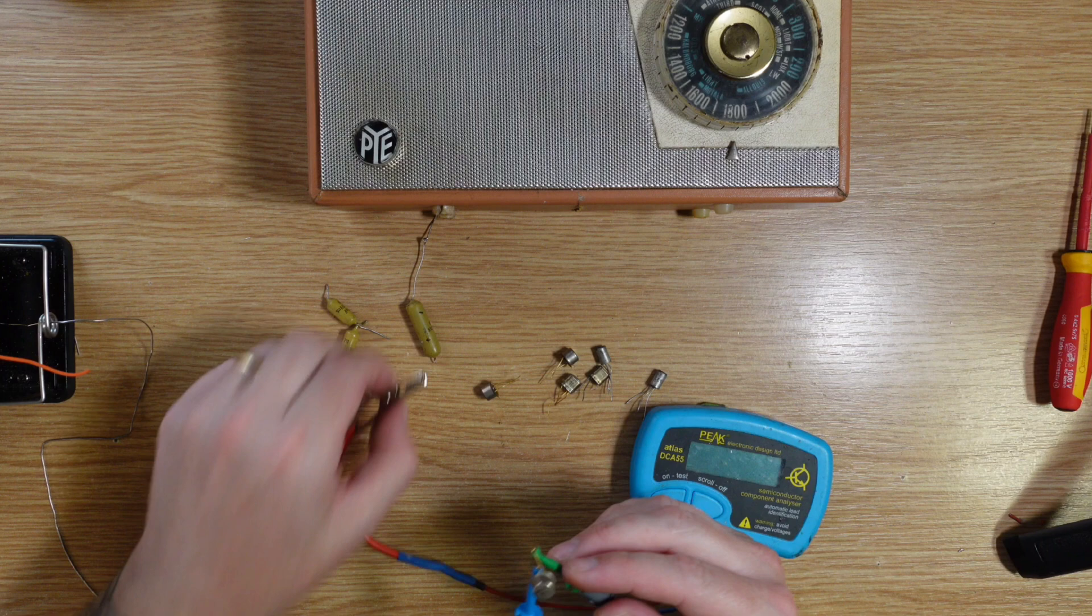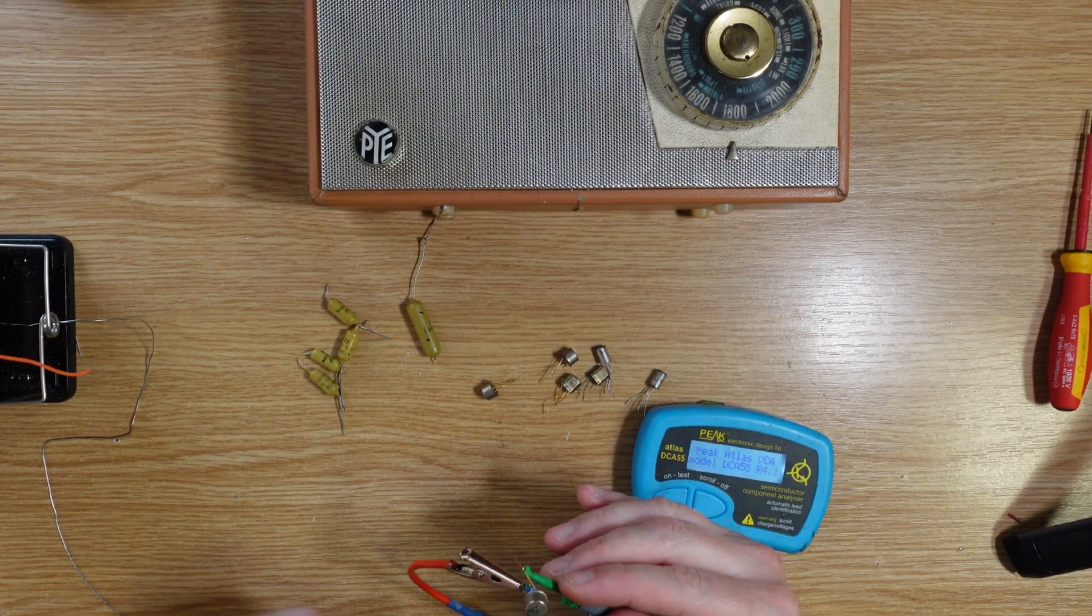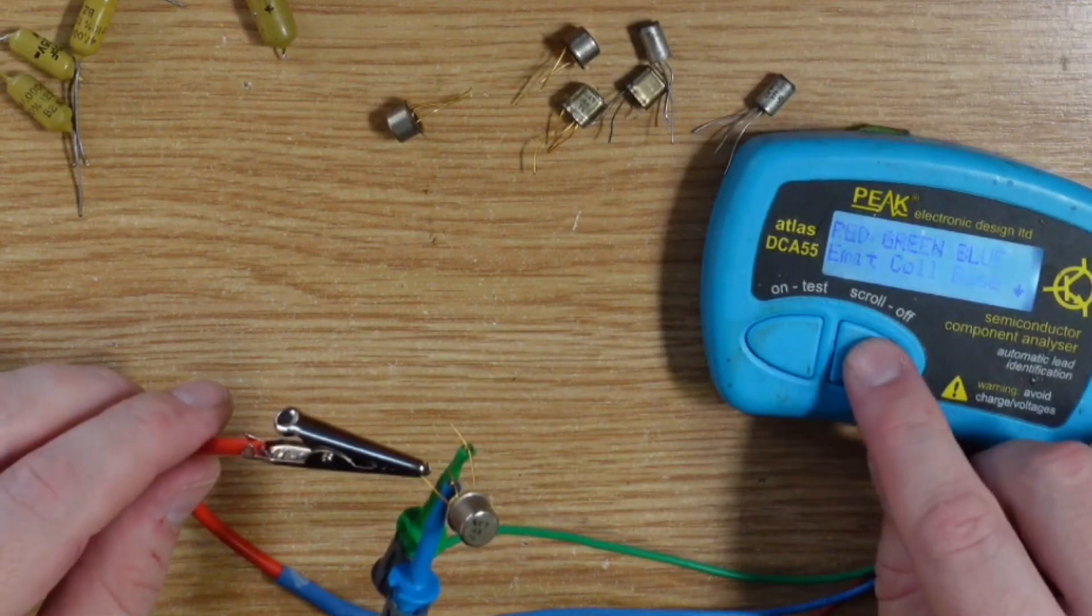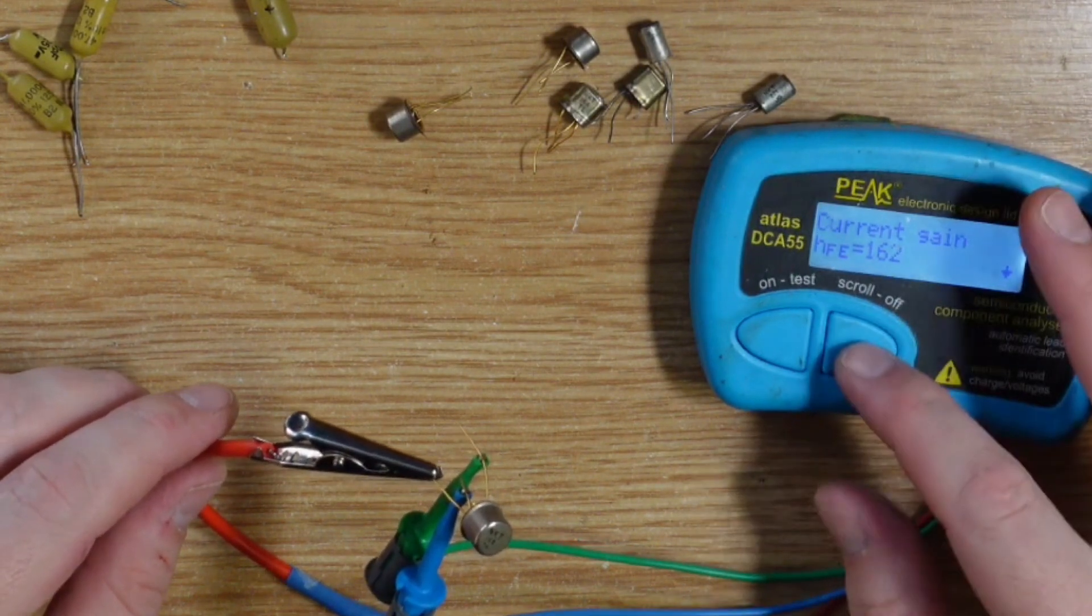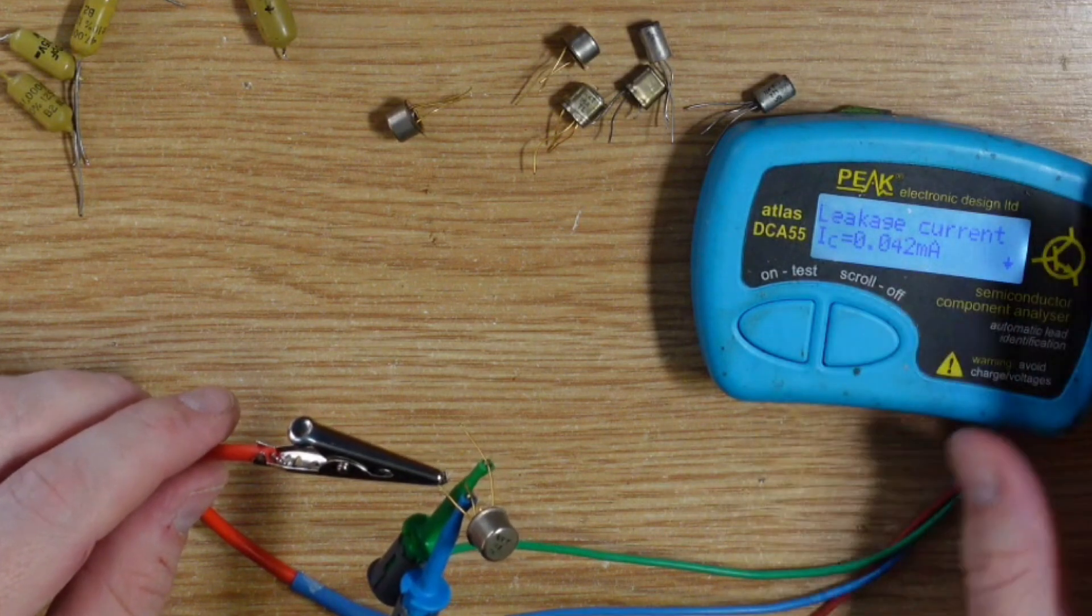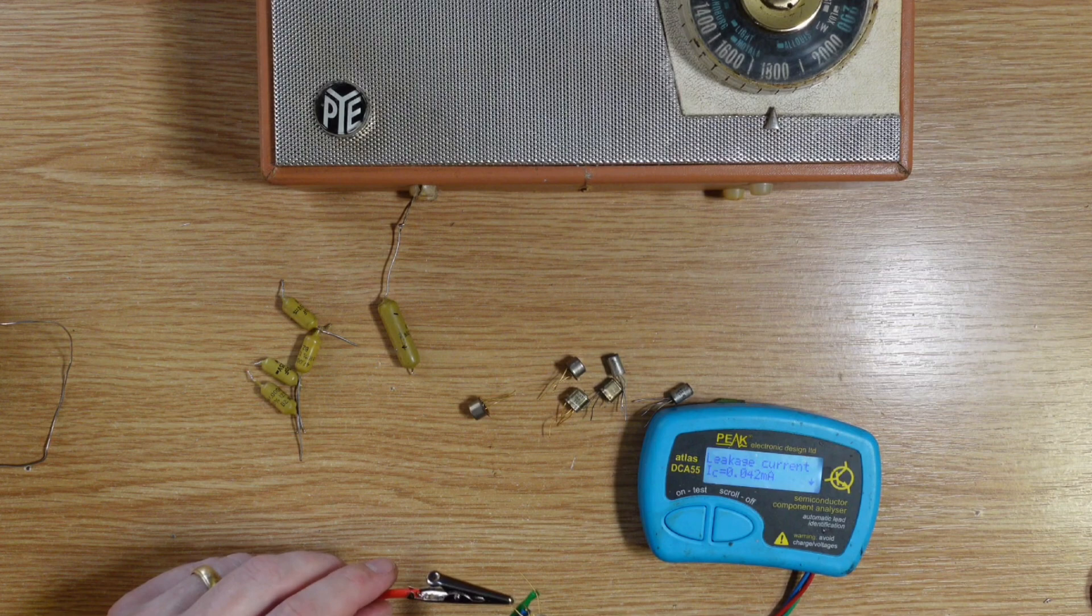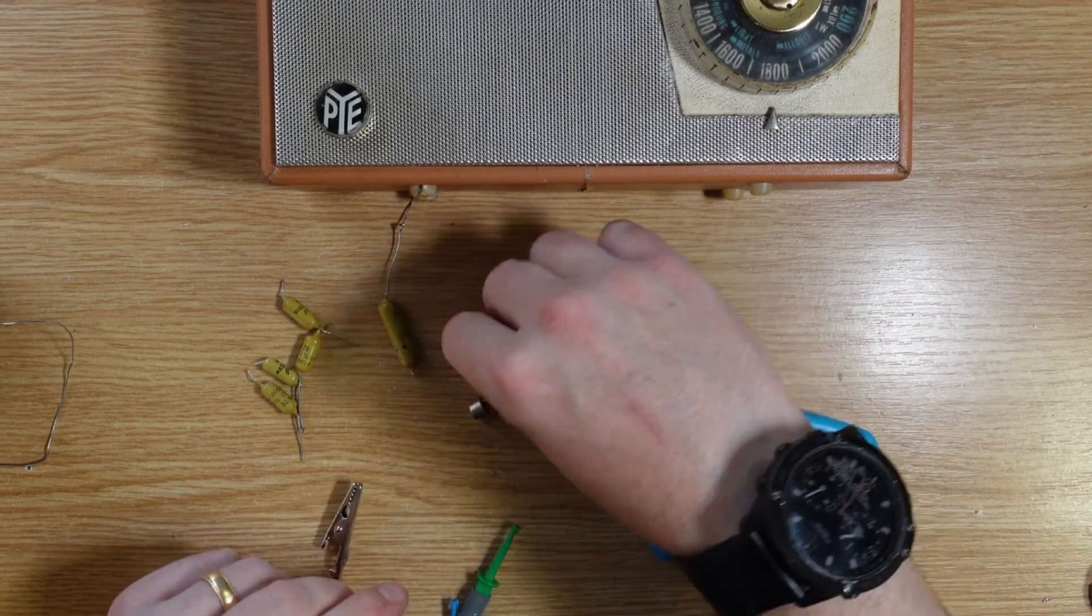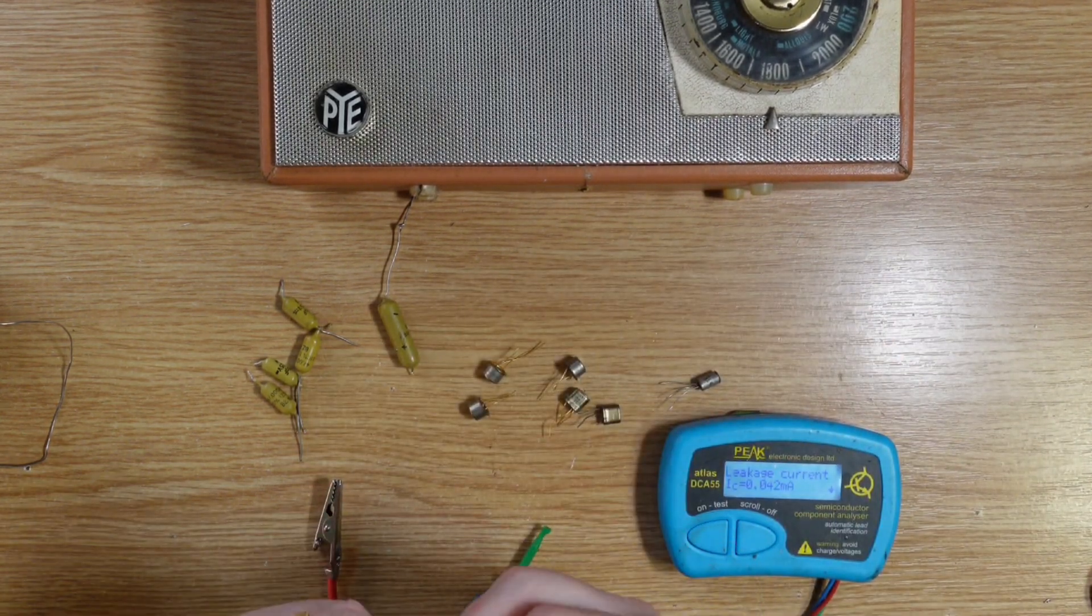So let's test them out and see what we've got. I really do like that these have gold pins. I mean, when you're there salvaging old radios, you don't tend to see that all that much. So it's a PNP germanium. Good. Which we want. Current gain is 162, which is brilliant. That's strong for the germanium. I went past the leakage and the leakage is 0.042 milliamps. That's bang on.